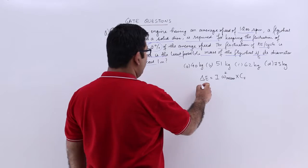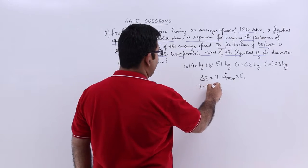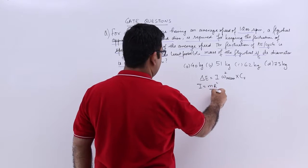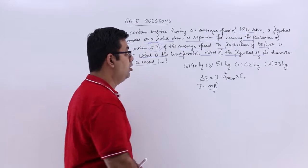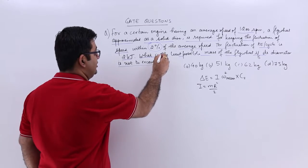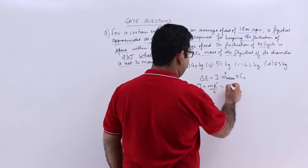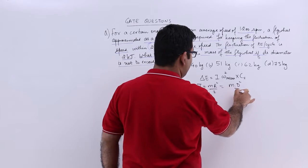So the value of I is MR square by 2 because it's a disc. Now the diameter is given to us as 1. So this becomes M into D square by 8.